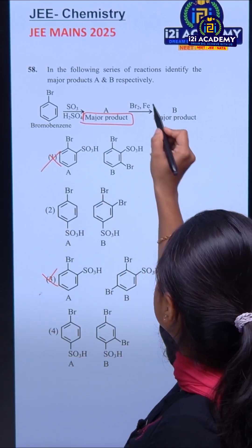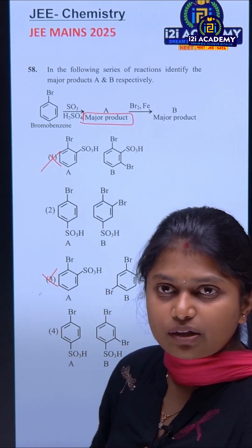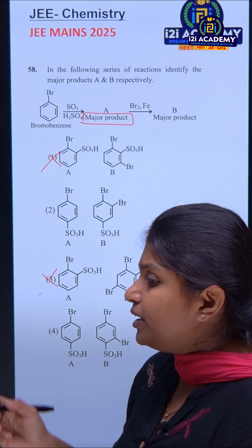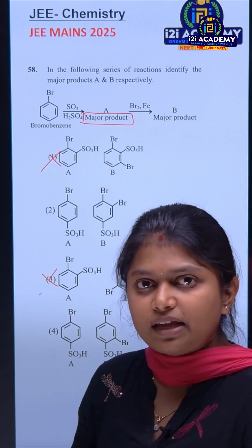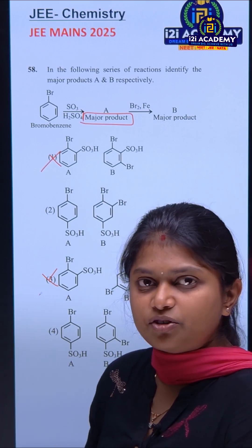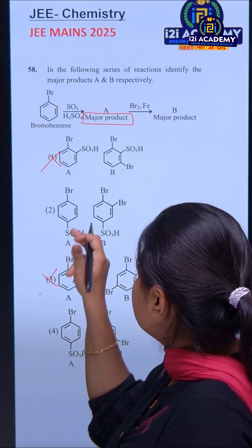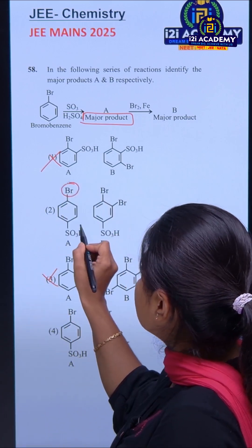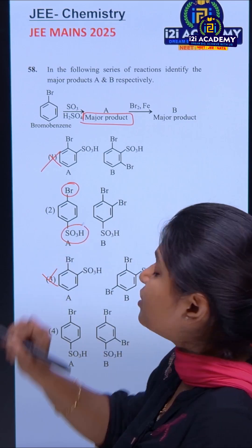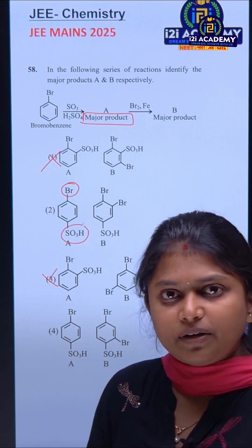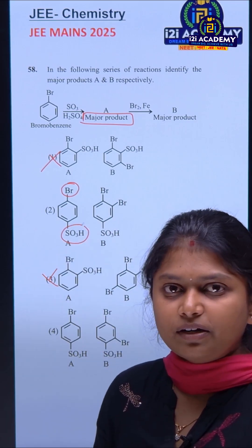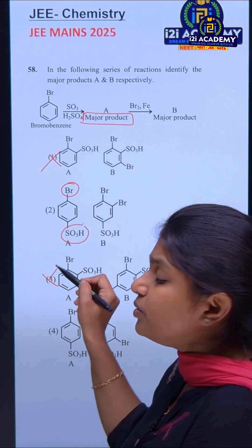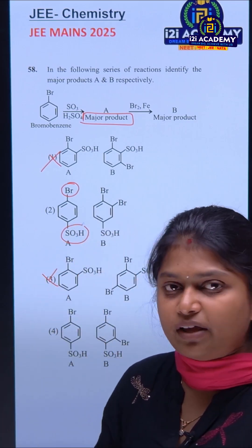The next reaction is a bromination reaction. Bromination is again an electrophilic substitution. In this molecule, the SO3H group dominates and controls the reaction. SO3H is the more effective directing group.